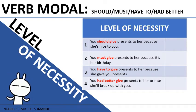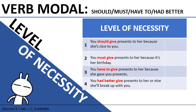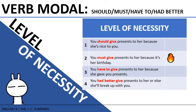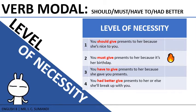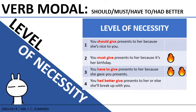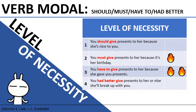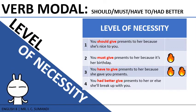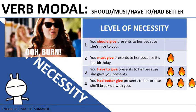You must give presents to her because it's her birthday — must is an obligation, meaning you need to do the action. This has a level-one burn urgency. You have to give presents to her because she gave you presents — have to is stronger than must; it gives you no choice. That's two-burn urgency. You had better give presents to her or else she'll break up with you — had better is the strongest, with three-burn urgency, because there are consequences involved.